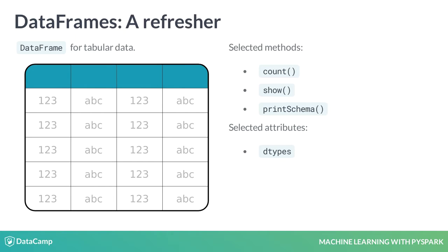The count method gives the number of rows. The show method will display a subset of rows. The printSchema method and the dtypes attribute give different views on column types. This is really scratching the surface of what's possible with a DataFrame — you can find out more by consulting the extensive documentation.